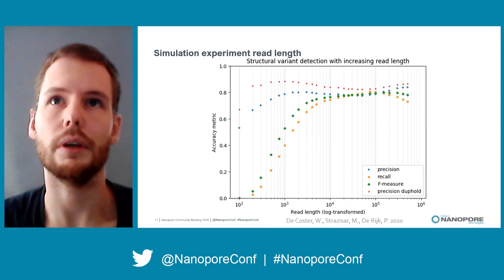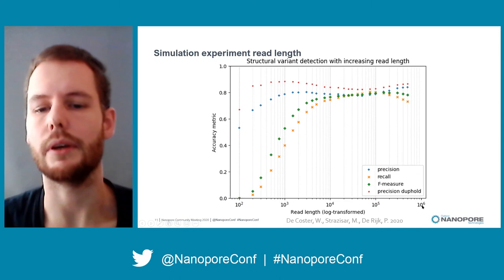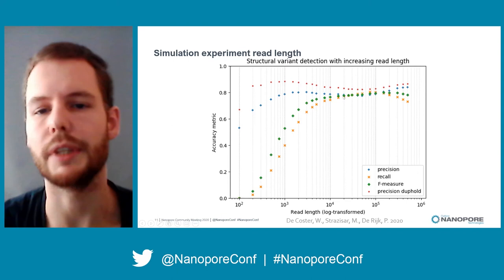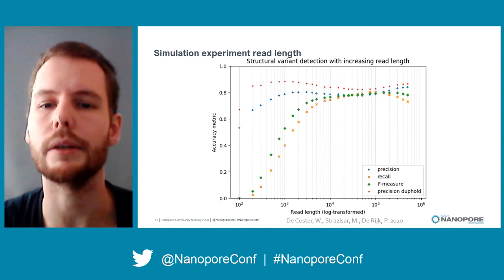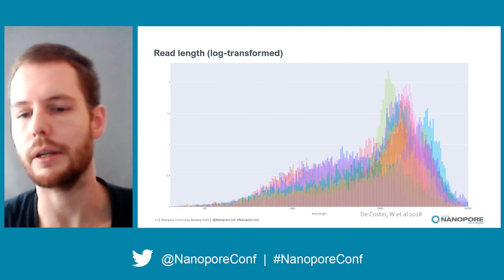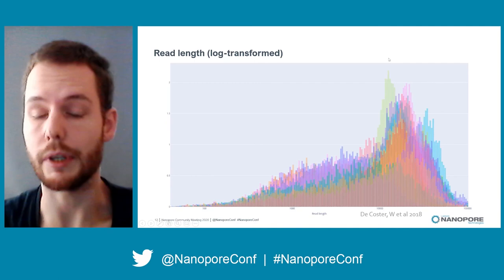We also had to optimize our shearing strategy, because there is an inconvenient trade-off between the yields that you get and the sequencing lengths. This simulation experiment, with read length on the x-axis and accuracy, precision, and recall on the y-axis, told us that at a read length of 20 KB or 15 KB, there was not much more to gain when further increasing the read length. So that is for us the sweet spot between read length and yield, and most of our reads are at the 20 KB length.